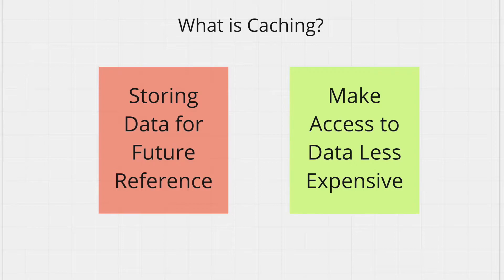For API requests, usually you have to pay for each request. For database queries, depending on the complexity of your query the response times will vary. Also, if your website is getting a spike of traffic and you're doing a complex query every time someone visits, your database will get overwhelmed. For both these cases you can cache your data, storing it in a temporary location from where you can access it super quickly.